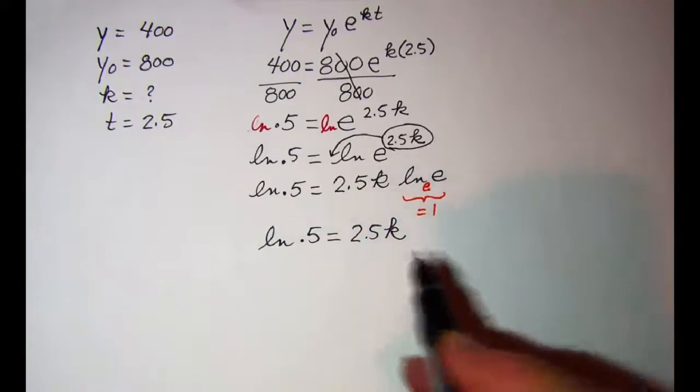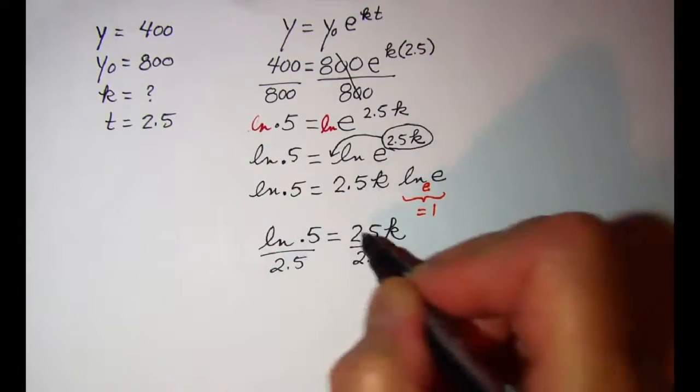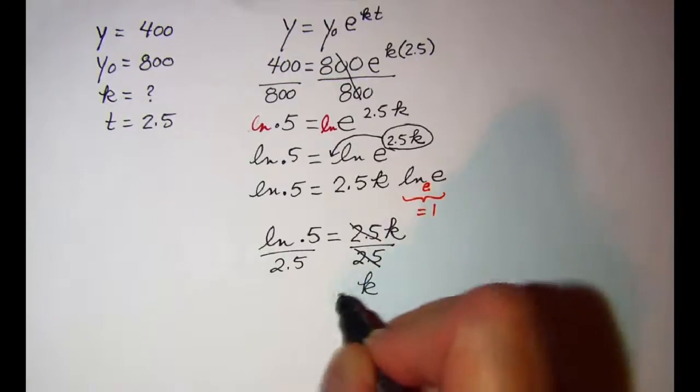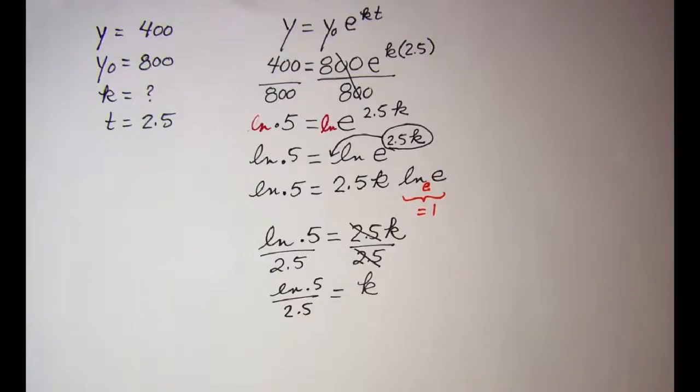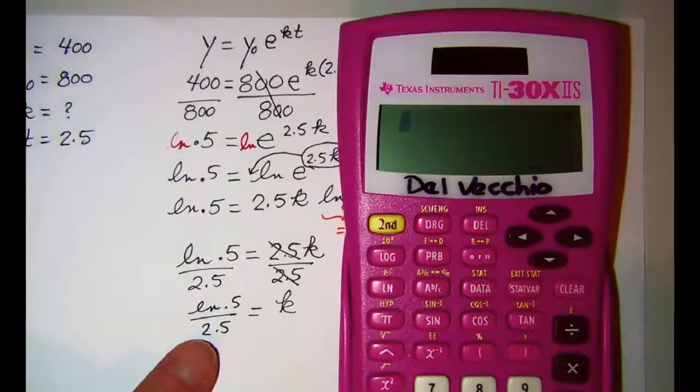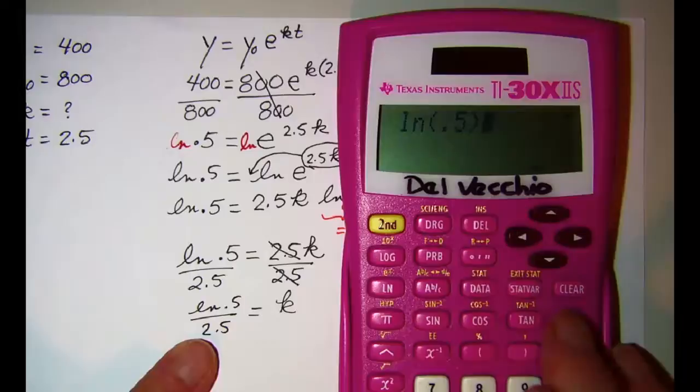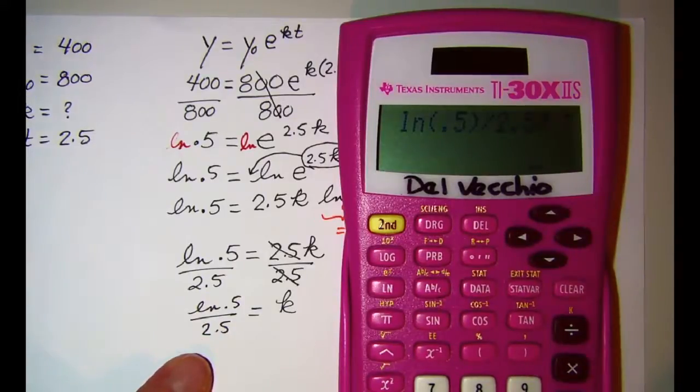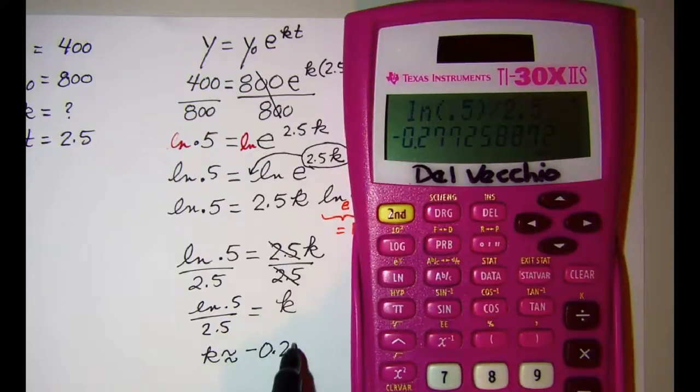To get k by itself I need to divide both sides by 2.5, so k is equal to ln 0.5 divided by 2.5. We need to close up the parenthesis after the argument before we can divide. Divided by 2.5 equals, so k is approximately negative 0.277.